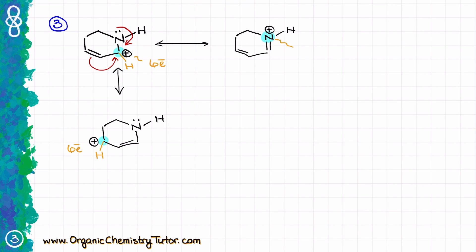And finally, my nitrogen on the right has a full octet — nitrogen has eight electrons, so it's a complete shell, which means that my middle structure, which I did first, is going to be my major contributor.